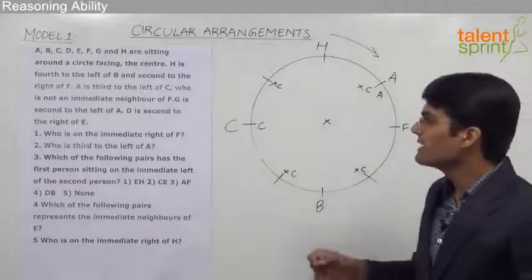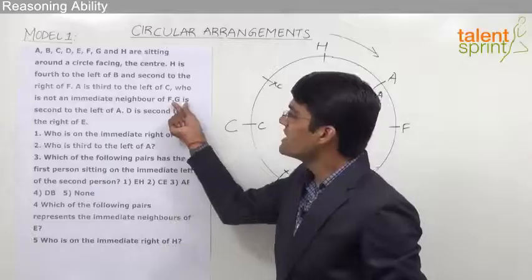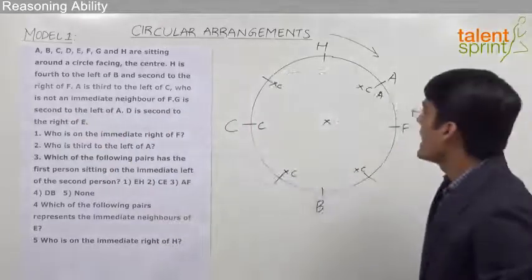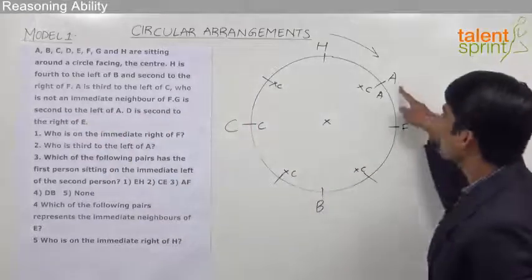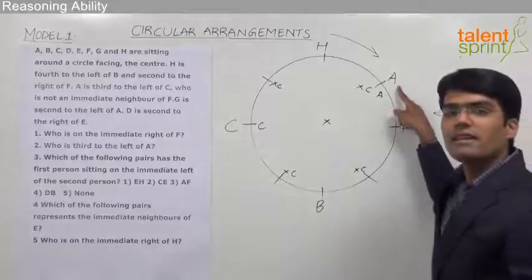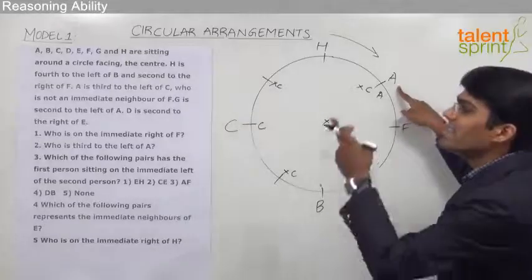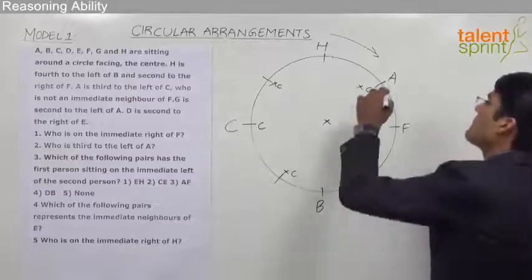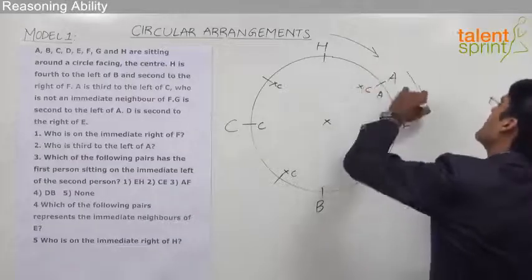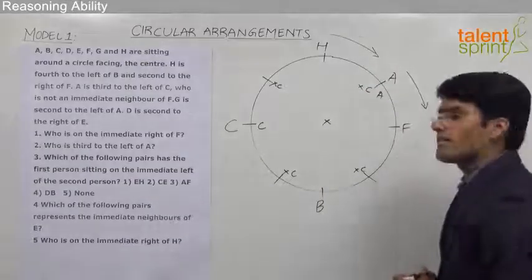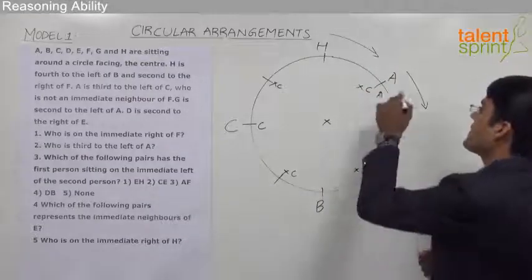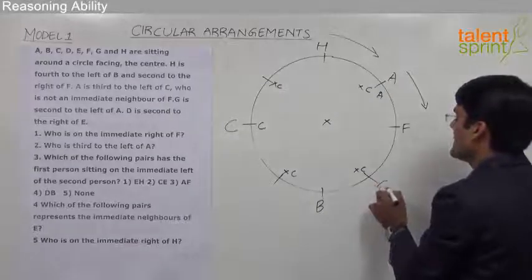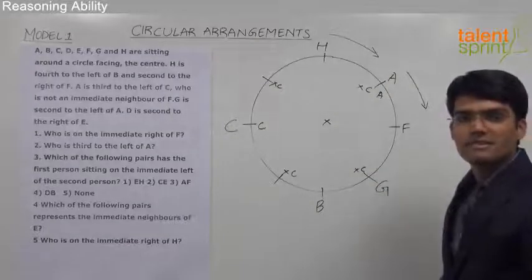Let us now take the next statement: G is second to the left of A. Since we already have the position of A, we can clearly mark G. Left of A is in the clockwise direction, so second to the left of A — 1 and 2 — G comes in this position. We have now placed six persons on the table.